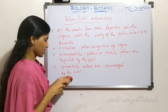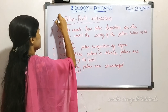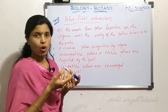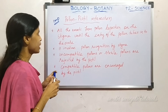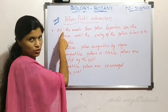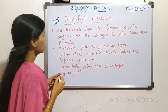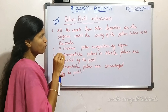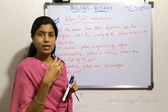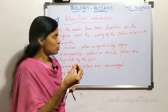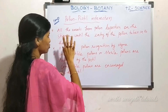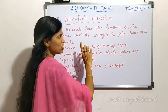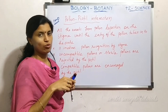The next topic is pollen-pistil interaction — the interaction between a pollen grain and a pistil. The pistil or carpel is the female reproductive part of a plant. The definition covers all the events from pollen deposition on the stigma until the entry of the pollen tube into the ovule. The anther releases pollen grains, which are deposited on the stigma.